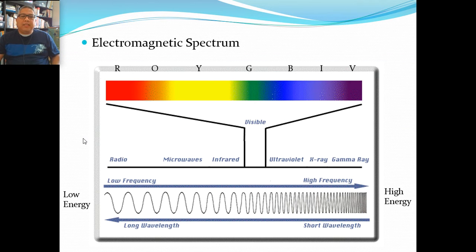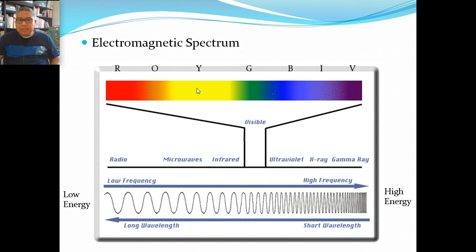So this is the electromagnetic spectrum. We start with — you will see the colors here. So colors of the rainbow — these are the colors that are actually visible to you.